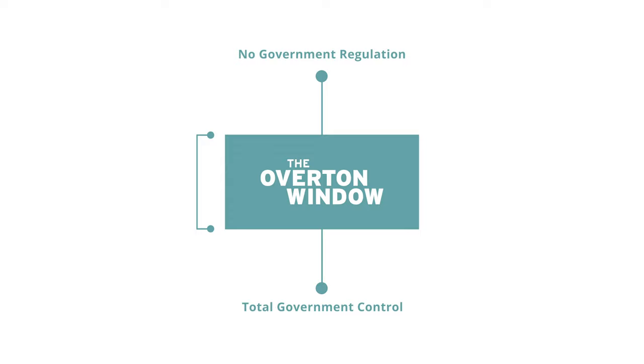The Overton window is a model of policy change. Ideas that are inside the Overton window are ideas that are politically safe — the public is ready to accept them.